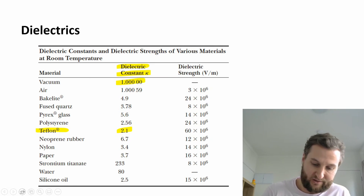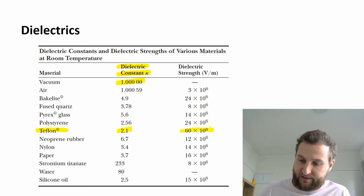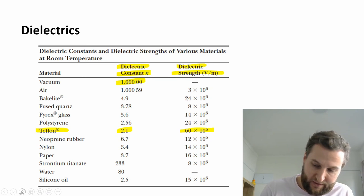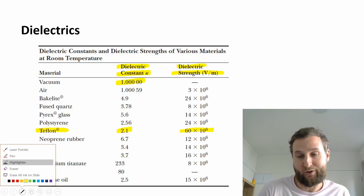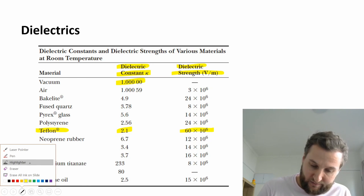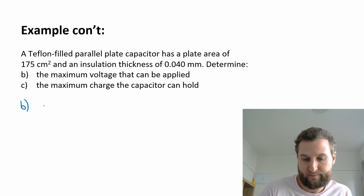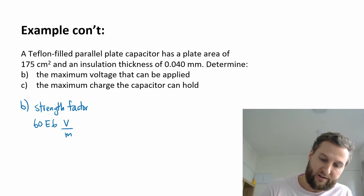I'm going back now to my constants here. I can see that for Teflon, I also have here 60 times 10 to the power of 6 as a dielectric strength. The units is volts per meter. If I expand that 60 times 10 to the 6, that's 60 million. That means you would need 60 million volts to bridge a one meter gap using that capacitor. This is called my strength factor.